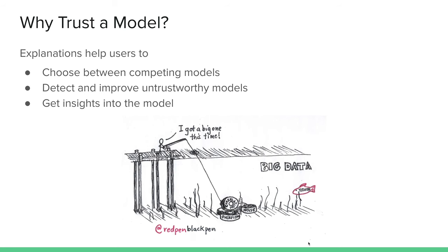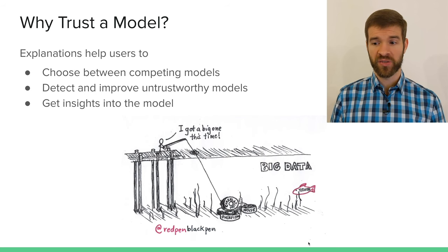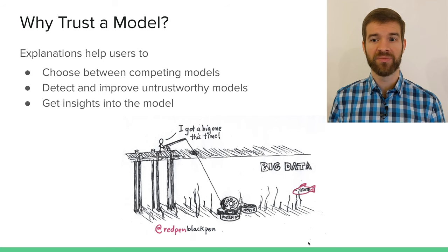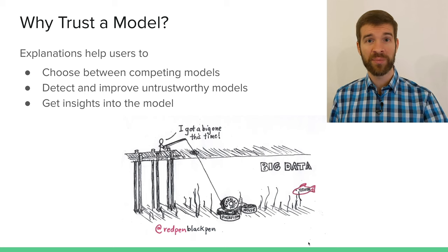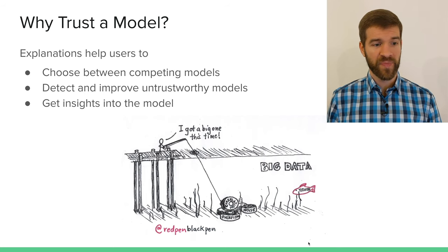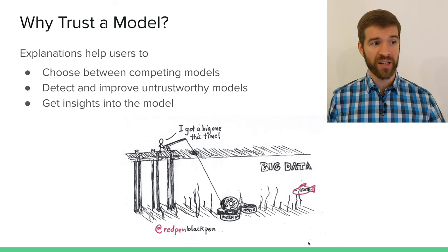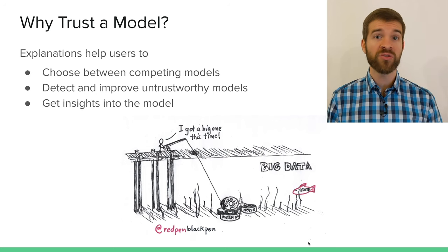It basically boils down to the question: why should we trust a model in the first place? If we had some explanations, we could help users make educated decisions and choose between competing models. We could say this model takes a bigger set of reasons into account when making a decision, or explain why a model might be untrustworthy.